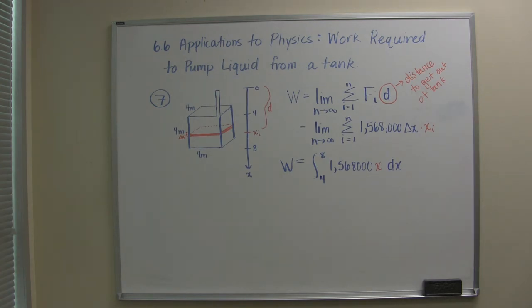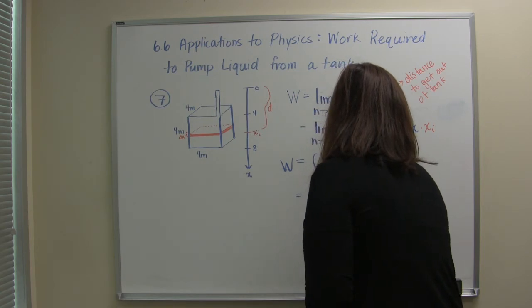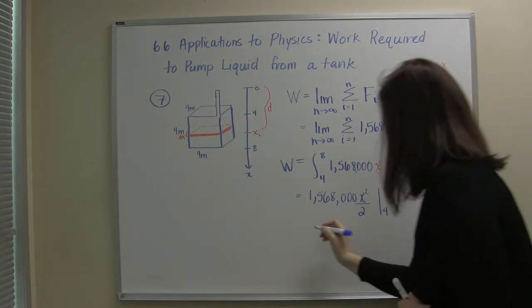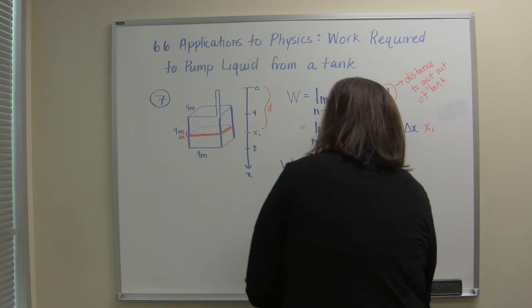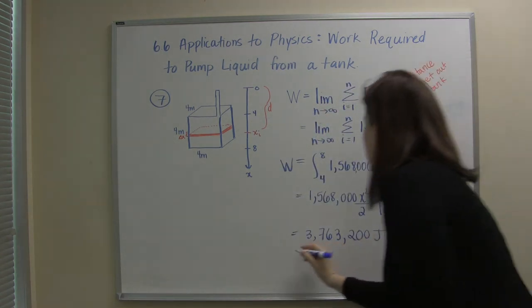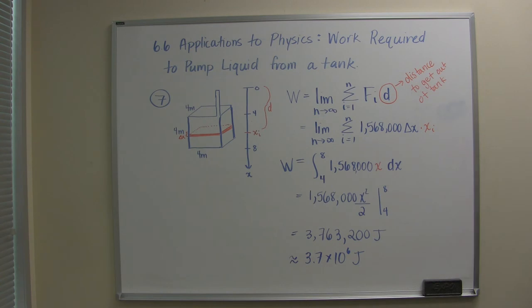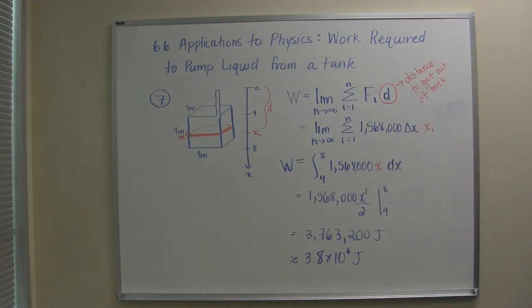Well for each of these problems the setup is the hardest part and once we have it set up the integration turns out to be not too difficult. So if we integrate this we'll get 1,568,000 x squared over two evaluated from four to eight. Now if you plug everything in you will get 3,763,200 joules or when a number is that big we just go ahead and say 3.7 times 10 to the 6 joules. And in fact I should round this to 3.8 times 10 to the 6 joules. So the work required to lift all of that fluid up and out of that tank is 3.8 times 10 to the 6 joules.